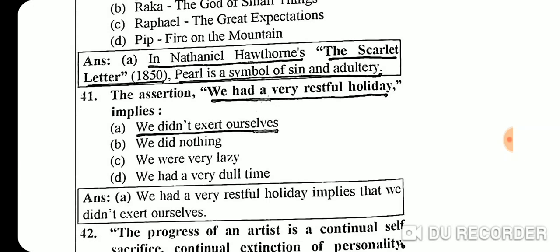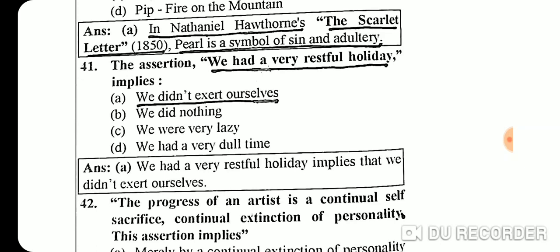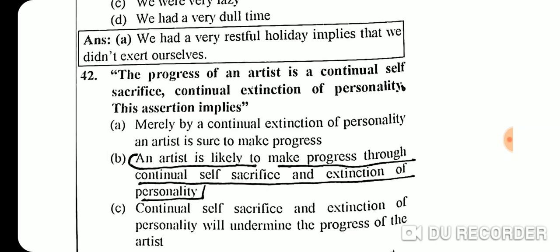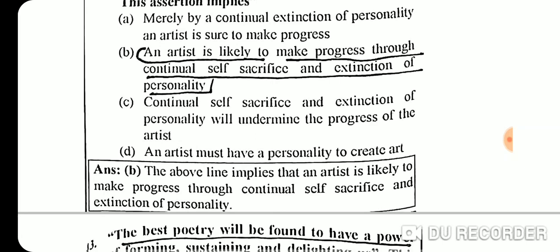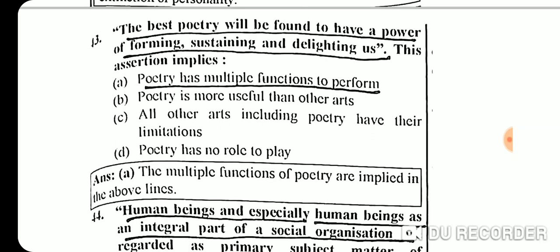Questions 41-45 are assertion/implication questions. Question 41 asks who asserted 'We had a very restful holiday,' implying 'we did not exert ourselves.' Question 42: 'The progress of an artist is a continual self-sacrifice, a continual extinction of personality' — this implies an artist is likely to make progress through continual self-sacrifice and extinction of personality.